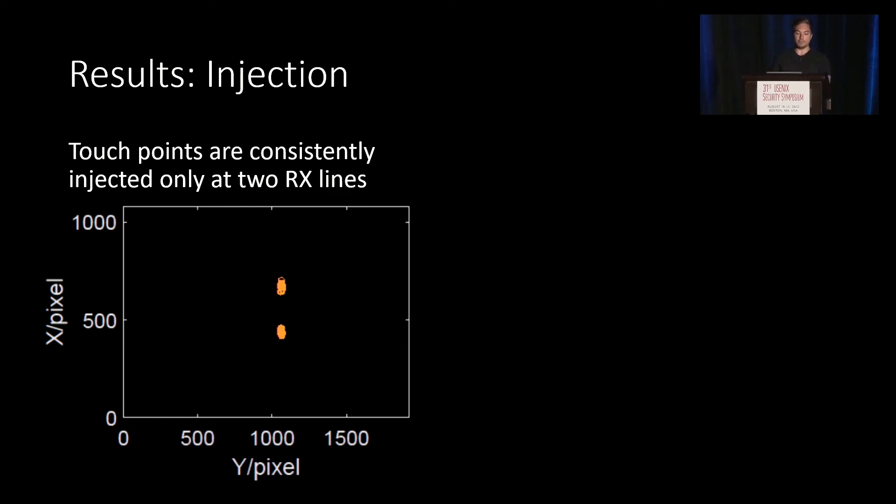So by using beamforming or smaller and bigger antennas, you can couple to only one RX line, or two, or even more. So it's also possible to inject multi-touch gestures.